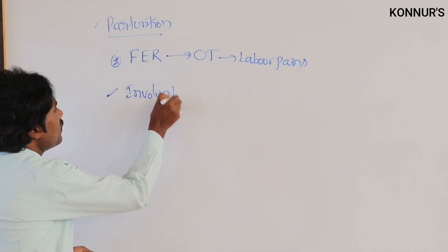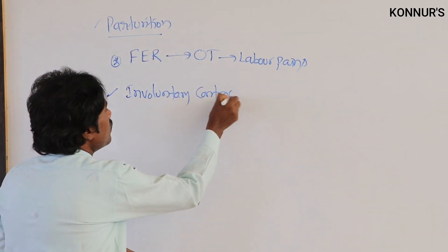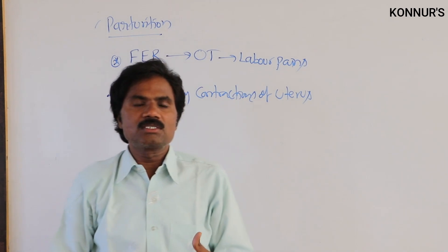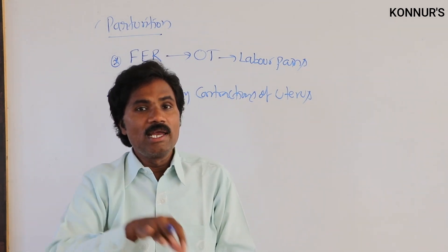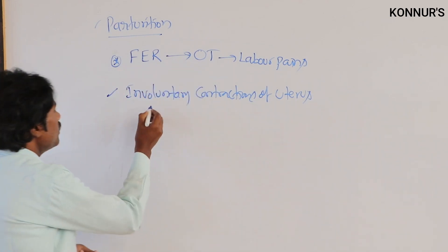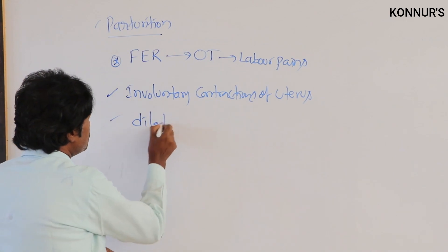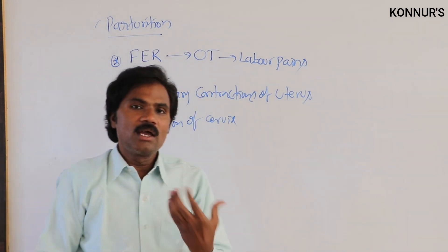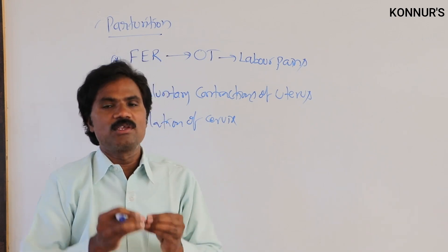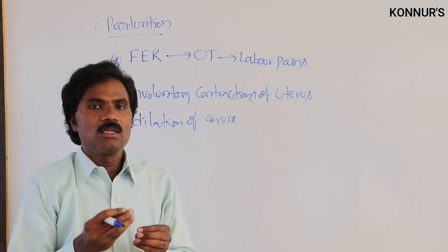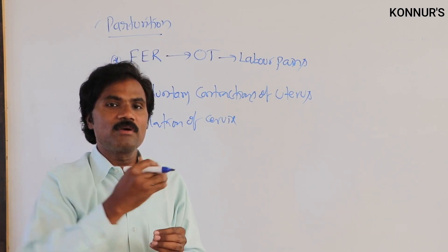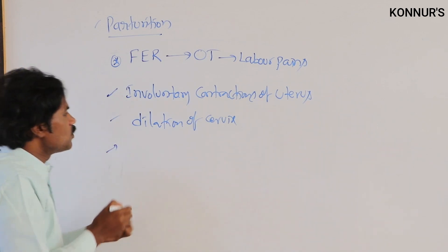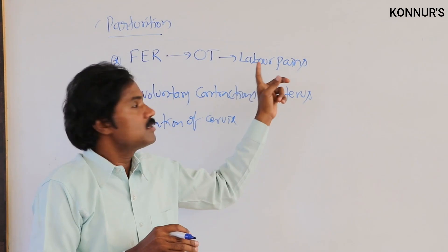These labor pains induce involuntary contractions of the uterus. Due to continuous involuntary contractions of the uterus, dilation of the cervix takes place. When dilation occurs, the cervix relaxes and increases in size, making it ready for the fetus and surrounding fluid to be ejected and delivered.